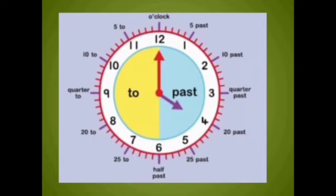Now here you can see two parts of the clock. One is yellow, the other one is blue. You can clearly see that the blue portion from 12 to 6, the right hand portion, shows the past time. And then the yellow portion from 6 to 12 shows the to time.